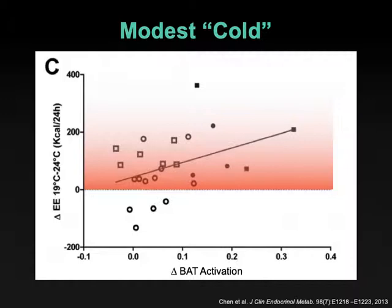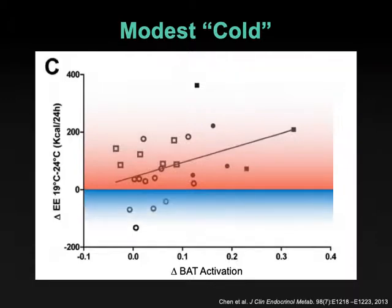If the symbol is above the line, it means energy expenditure at 19 degrees was larger than at 24 degrees — a positive number, greater in the cold. Anything below the line is lower at 19 degrees. The large majority are above this line, so exposure to 19 degrees caused increased energy expenditure in the large majority of individuals compared to 24 degrees, and this is just one single day. You bring a subject into the lab and they live in one room set to either 19 or 24 degrees — with a bed, a TV, a sink, and food delivered — essentially contained for a day.